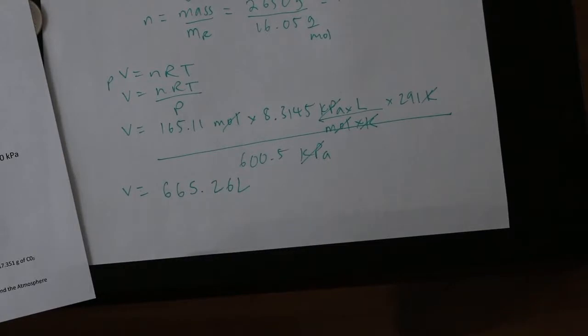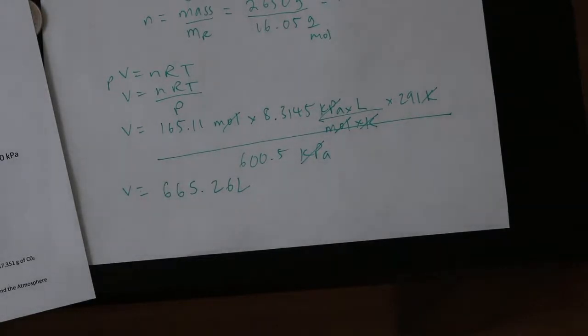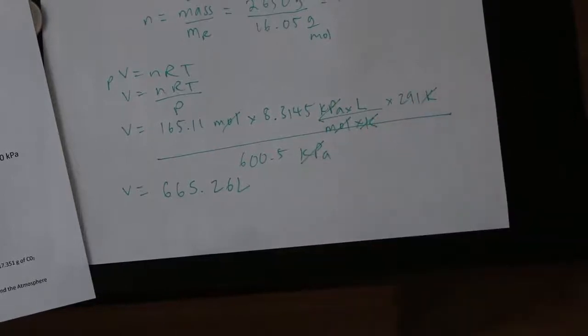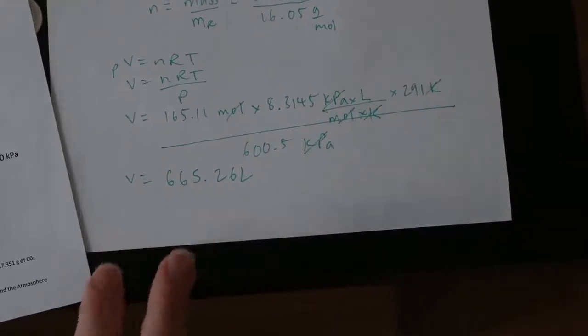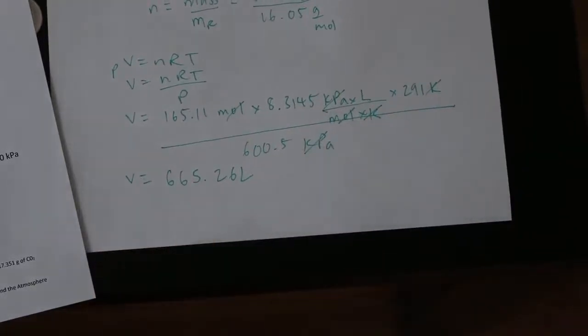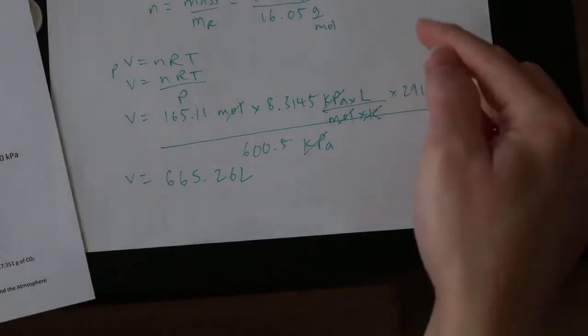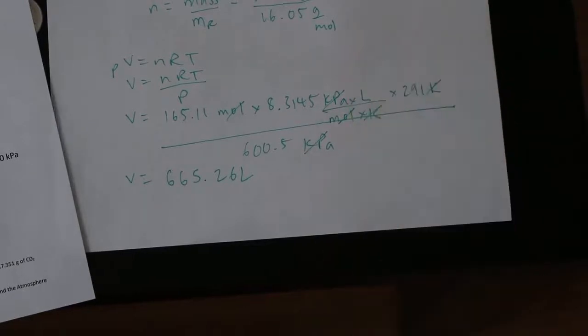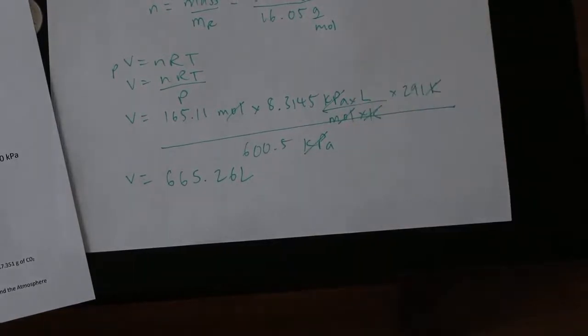So our volume is going to be 165.11 multiplied by 8.3145 multiplied by 291 divided by 600.5. Now it's going to give us a volume of 665.26 liters. And the answer key here is telling us that it's 666 liters. So the exact answer you get is going to depend on where you rounded, but as long as you show you're working and get something that's in the ballpark, you know you're right. So if you had rounded up some of these numbers, it would have changed your final answer. But we got 665.26 liters instead of 666 liters just because of the numbers we used.